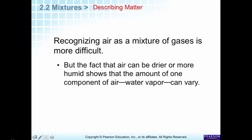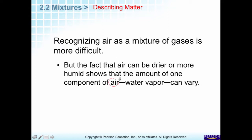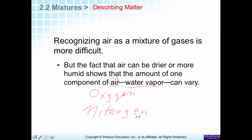Air is a mixture containing water vapor, oxygen, nitrogen, carbon dioxide, and other gases. It all looks the same to us, so that's a different type of mixture. We have two types of mixtures.